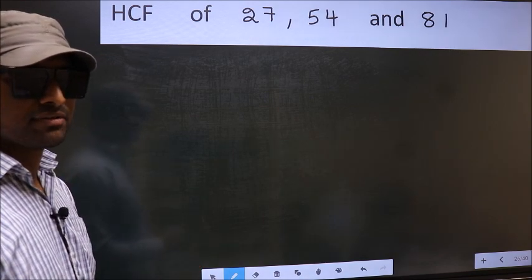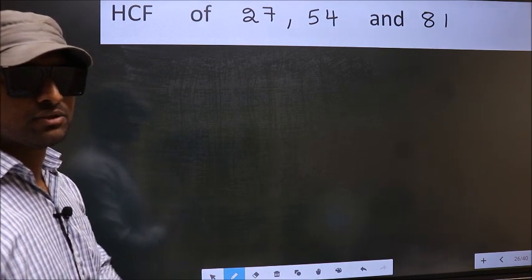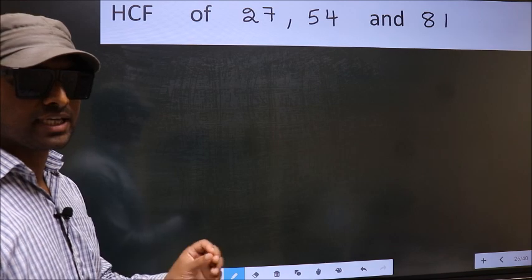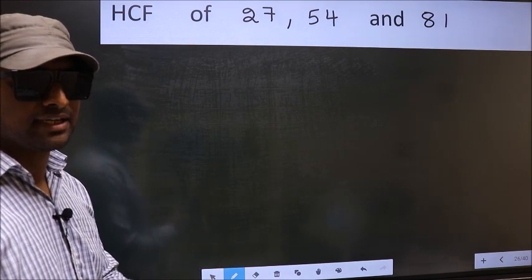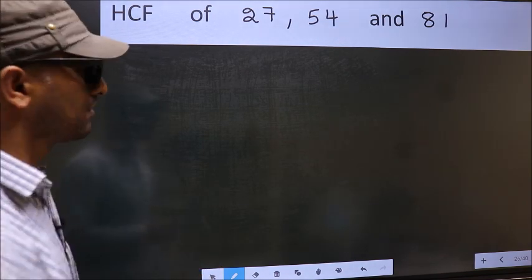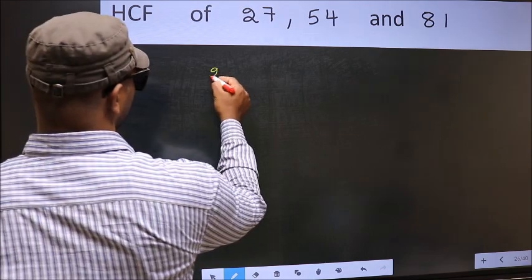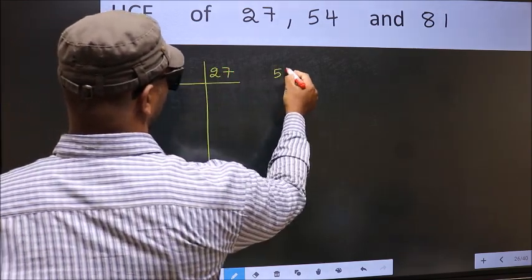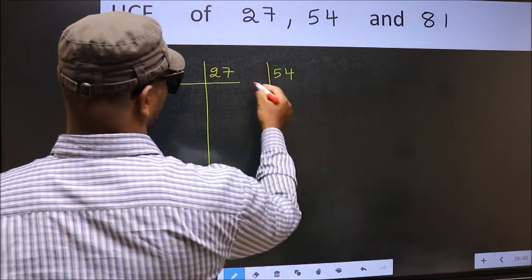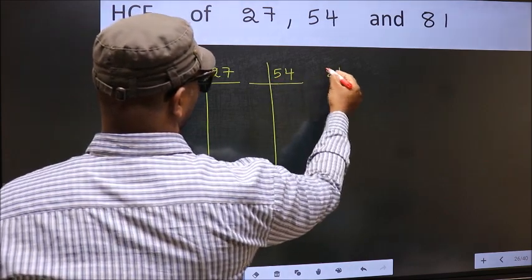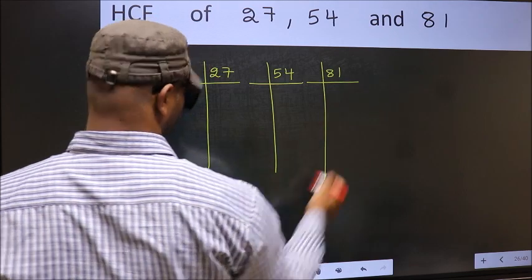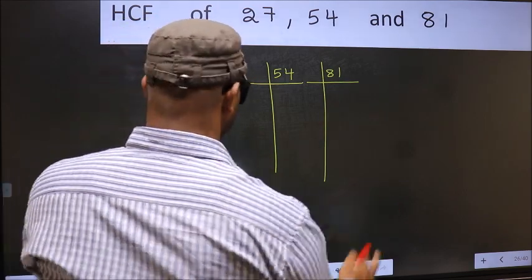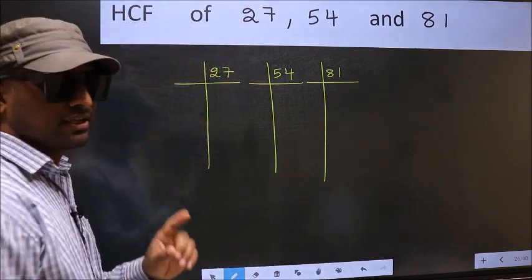To find the HCF, we should do the prime factorization of each number separately. What I mean is 27, 54, 81. This is your step 1.